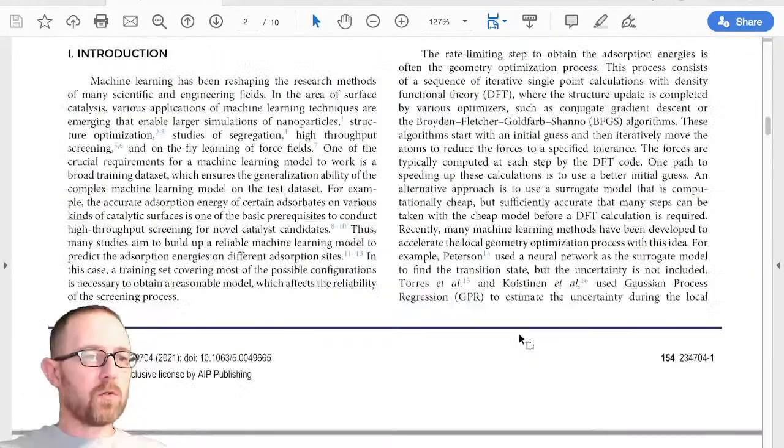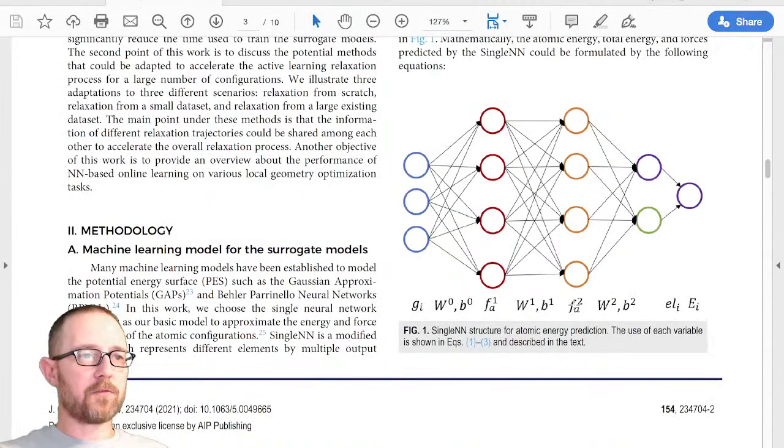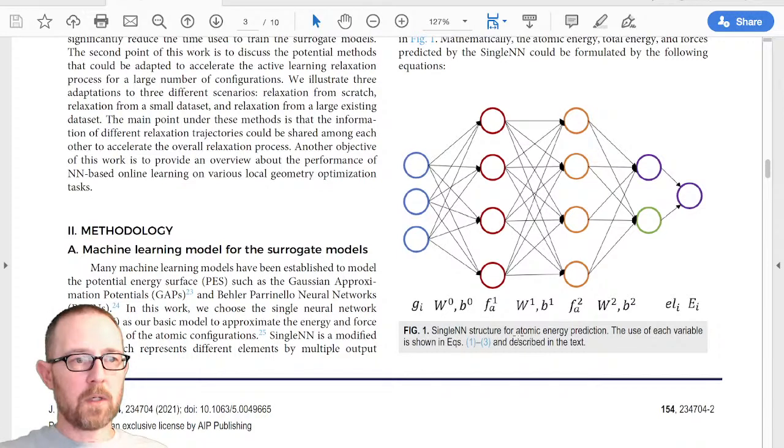Okay, so basically the idea is that we have a neural network that is the machine learning model that we use, and it's based on the single neural network paper that I talked about a couple days ago. And we have some fingerprints that represent atomic environments, they go through the neural network, and we have multiple outputs that give us the atomic energy. And then finally we combine that to get the total energy.